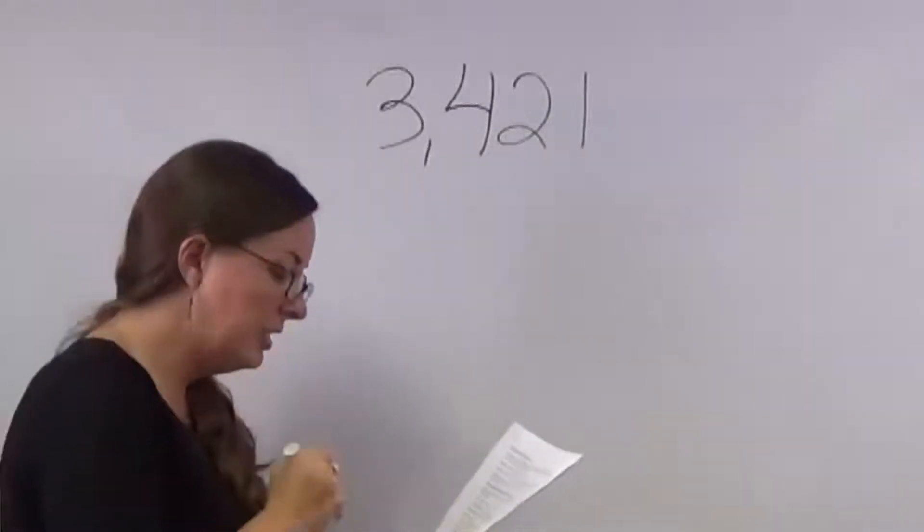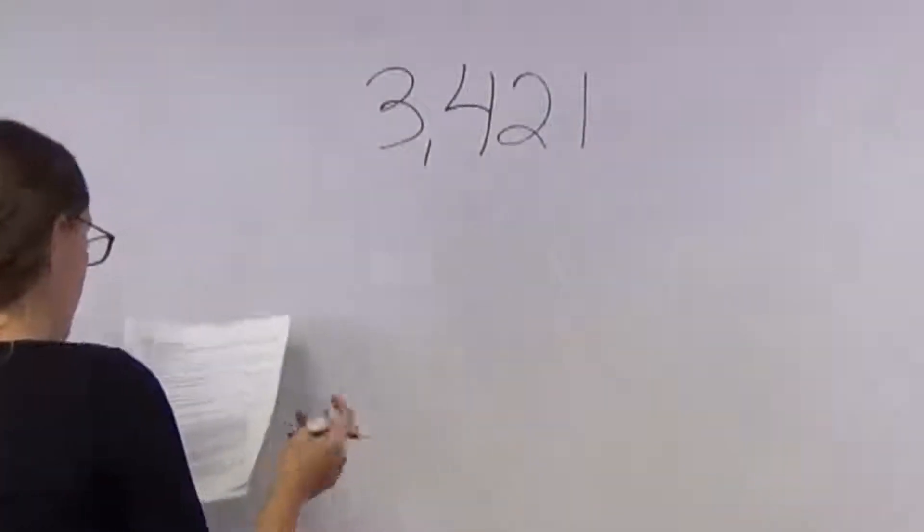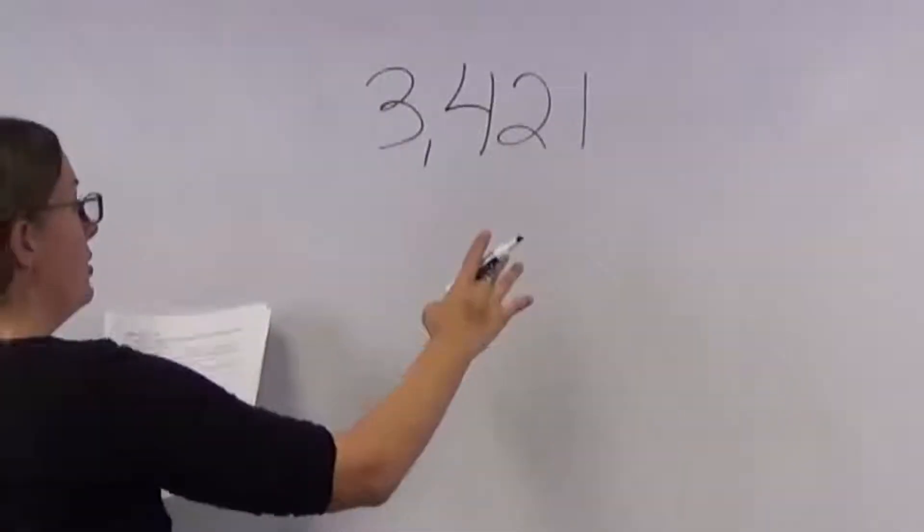Rounding numbers to the thousands place means that you are rounding to that specific place value. All of the other digits turn to zero.